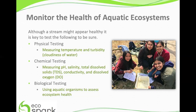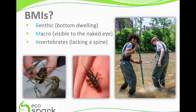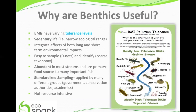Benthic macroinvertebrates — I mentioned these earlier — are small aquatic bugs visible by the naked eye that lack a spine or backbone, and can be found at the bottom of our streams, rivers, lakes, and other water bodies. BMIs are extremely useful when assessing water quality for several different reasons. Since they have varying tolerance levels to pollution, what kind of bugs you find can tell you how clean or polluted the water is. Some BMIs are very sensitive to pollution, like stoneflies, and can only live in clean water, while other BMIs such as worms or sow bugs are tolerant to pollution and can live in clean or polluted water. Those that are sensitive to pollution will not be found in polluted waters, while tolerant species are able to live in either condition.